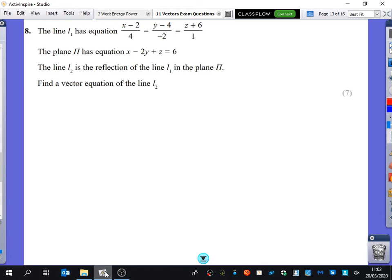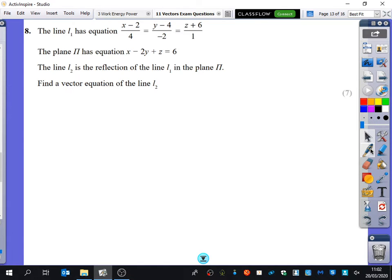Okay, we'll do this one last exam question. It's on reflecting lines in planes. So we've got line L1 with this equation, the plane with this equation, and then we've got line L2. We just want to find an equation of L2. What do you think I would do first of all with L1 and with the plane pi?